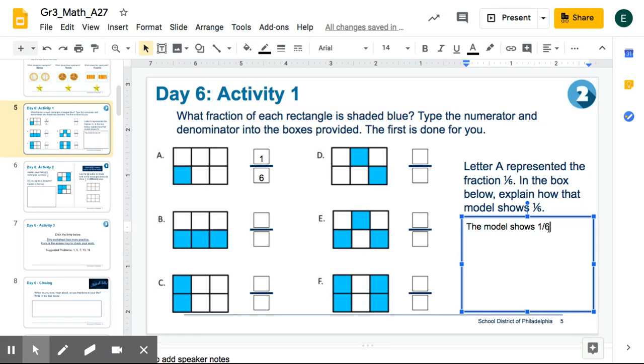It doesn't look exactly like the fractions we're used to seeing, but that's how we'll know. Once you push spacebar, it will turn into one-sixth. The model shows one-sixth because, and then you can finish your sentence.